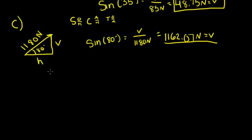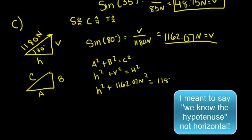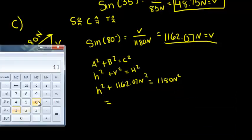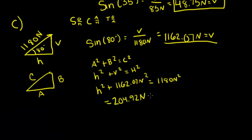Now let's do Pythagorean theorem to find the horizontal. Pythagorean theorem states that a² + b² = c². We can plug in the numbers we know — we're solving for H, we know the vertical, and we know the hypotenuse. We plug all this into our calculator and our answer is 204.92 newtons, and that's the horizontal.